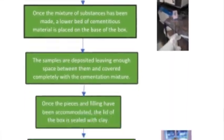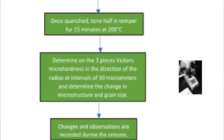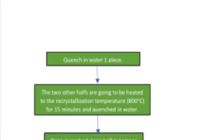Once the pieces and filling are accommodated, the lid of the box is sealed with clay. Then we start heating the muffle. We are going to use an electric oven, which will take about two hours to reach the required temperature. The heat treatment involves keeping the steels at about 900 degrees for 12 hours. After this, we quench one piece in water. The two remaining pieces are heated to the recrystallization temperature of about 800 degrees for 15 minutes and quenched. One piece is then tempered at 200 degrees for 15 minutes. Afterwards, we use the Brinell microhardness tester to report our observations and conclusions.